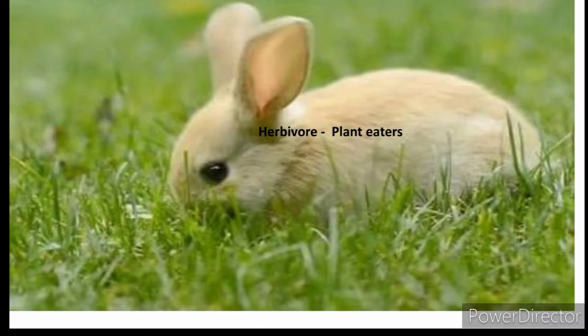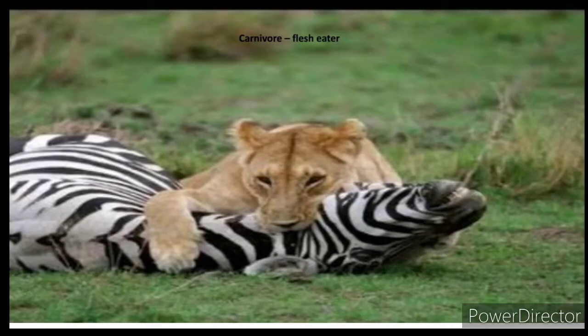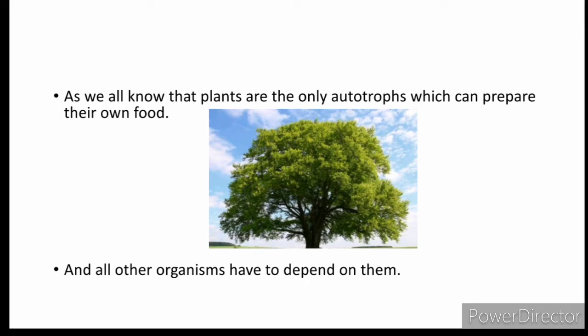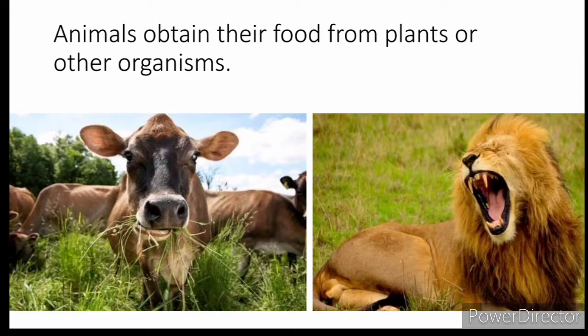Some animals are herbivores, some are carnivores, and some are omnivores. Plants are the only autotrophs which can prepare their own food, and all other organisms have to depend on them. Animals obtain their food from plants or other organisms.